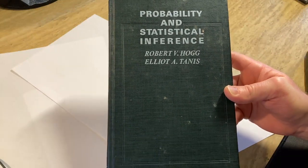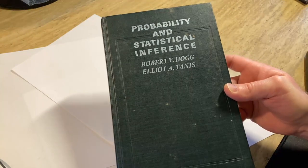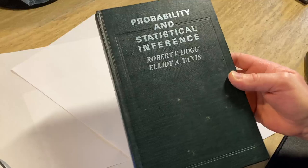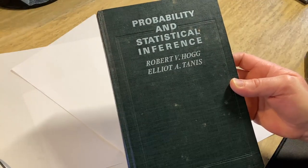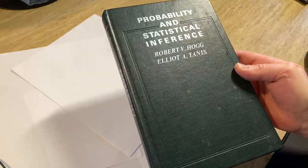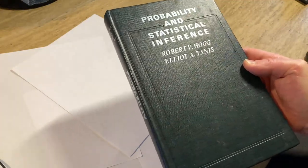Hi. In this video, I want to show you a book that you can use to teach yourself probability and statistics. It's called Probability and Statistical Inference by Robert V. Hogg and Elliot A. Tannis. And this is a good book, a pretty good book. It's got answers, it's got explanations, it's a solid textbook.